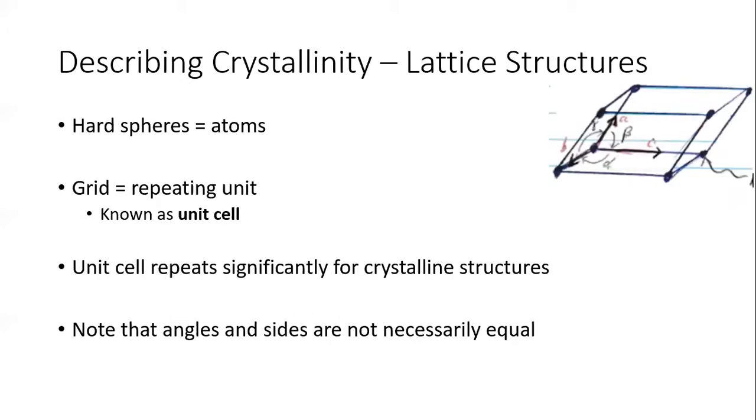To describe crystallinity, we're going to use these things known as lattice structures. I have a hand-drawn picture here of our lattice. You can see I have spheres here, they represent atoms. Basically, what we're going to do is we're going to say that this thing repeats.